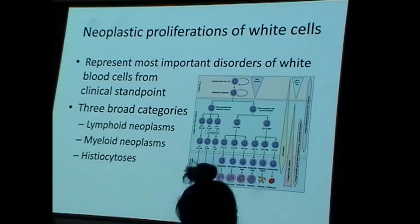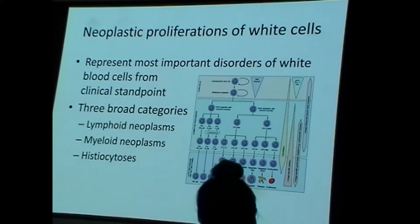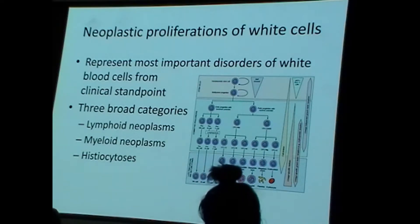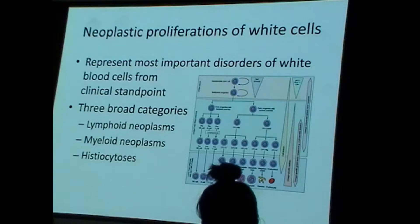Let's talk about the most important category when it comes to white blood cells — neoplastic proliferations of white blood cells. There are really three broad categories: lymphoid neoplasms, myeloid neoplasms, and histiocytosis. Histiocytosis refers to malignancies of histiocytes — histiocytes being an older term for macrophages. Remember, we broke down the immune system into lymphoid tissue and myeloid tissue.